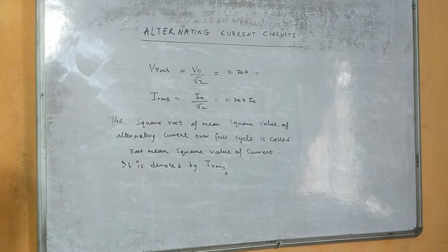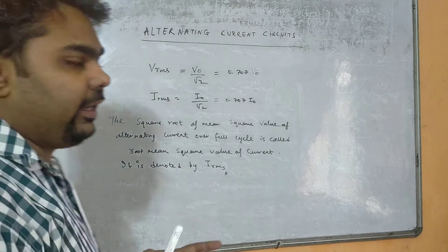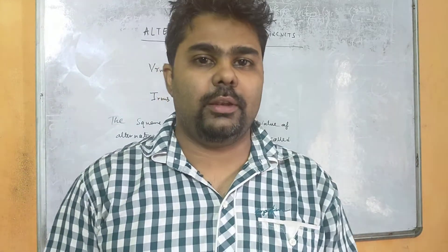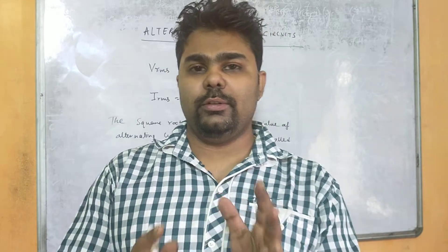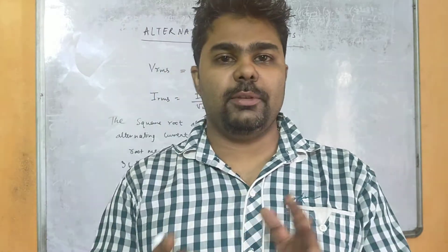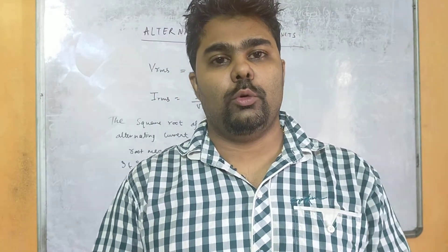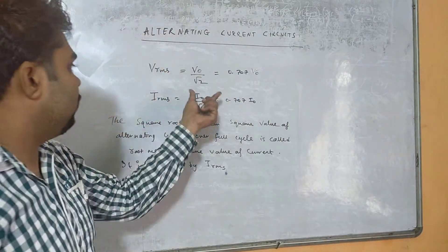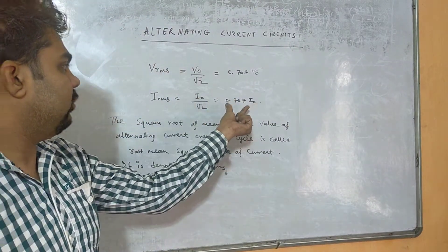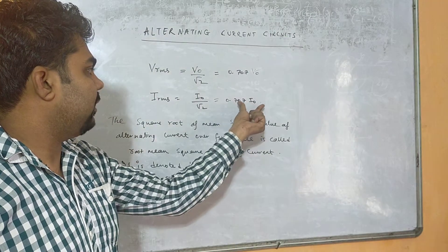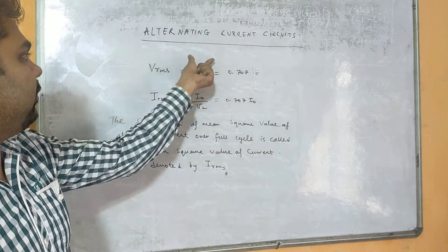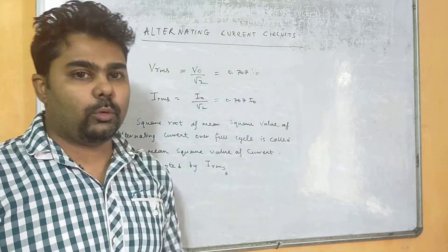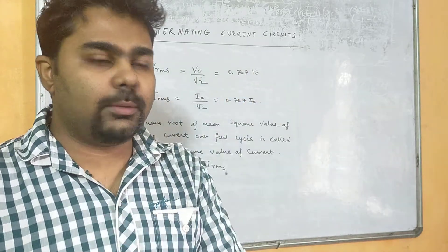The next symbol we will see again and again in this chapter is IRMS and VRMS. RMS stands for root mean square. IRMS equals I₀ divided by root 2, that is 0.707I₀, and VRMS equals V₀ divided by root 2, that is 0.707V₀.